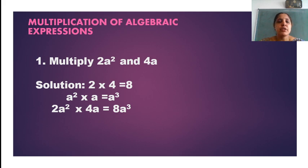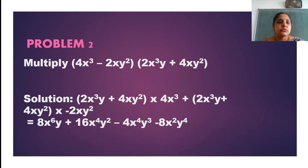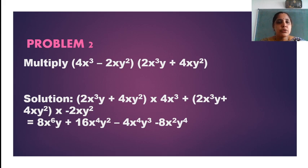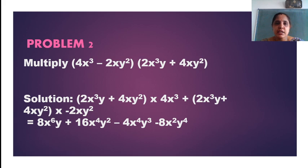Now let's consider another example with two terms. Both are binomials. I have enclosed the terms within brackets to indicate multiplication — you don't find any symbol between the two brackets, which means we are multiplying them. The easiest way to find the solution is to retain one algebraic expression as it is and split the other into two parts, then multiply.